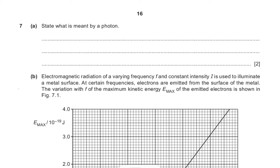The photoelectric effect is the phenomenon in which you have a piece of metal, you put light onto it, and then electrons come out. From this alone you can deduce that light actually also has particle qualities and not only wave qualities, and that's where we are introduced to the wave-particle duality of light.